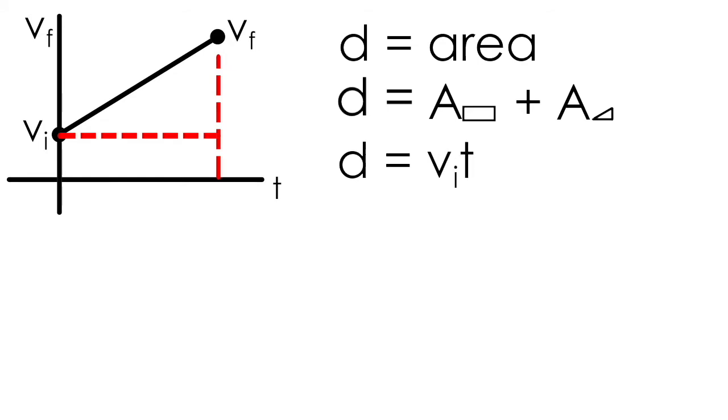Recall that the area of a rectangle can be found by taking its length and multiplying by its width. The length of this rectangle, the long side, can be expressed as t, the total time the object is in motion for, which is shown along the x-axis. The width, or the shorter side, can be expressed as the distance between the x-axis and our point on the y-axis, which we are calling vi.